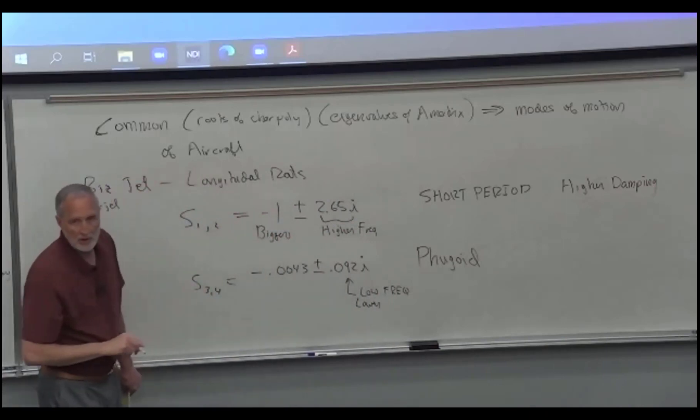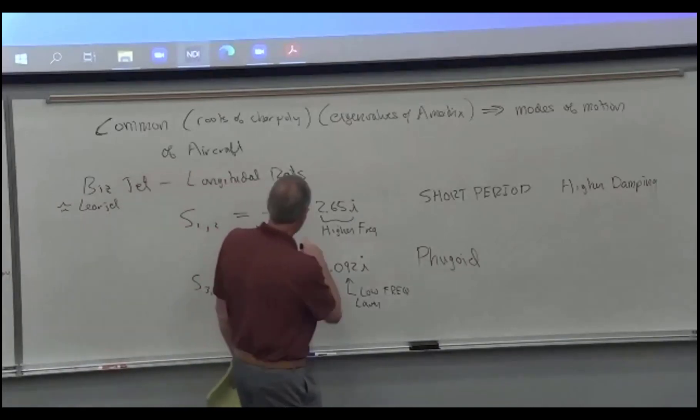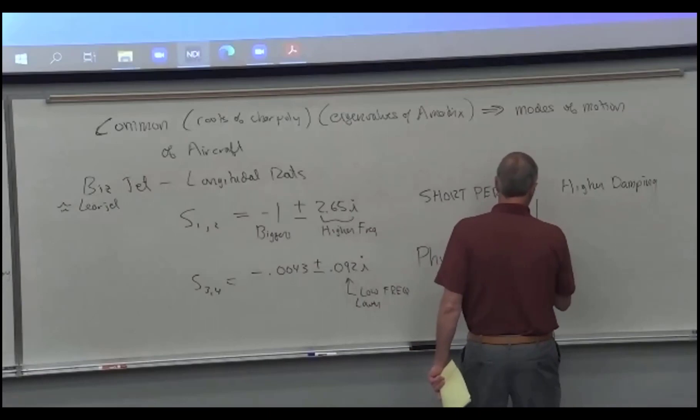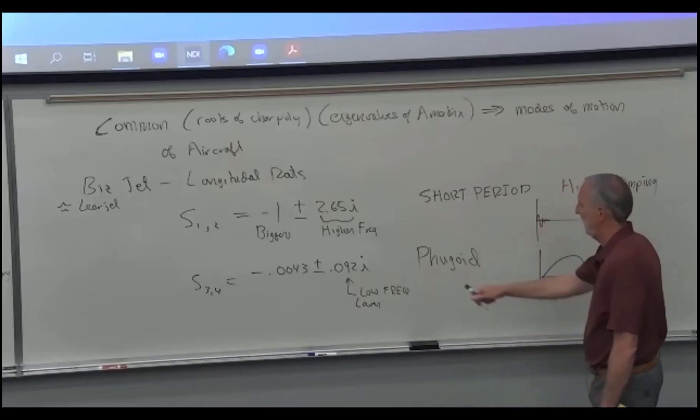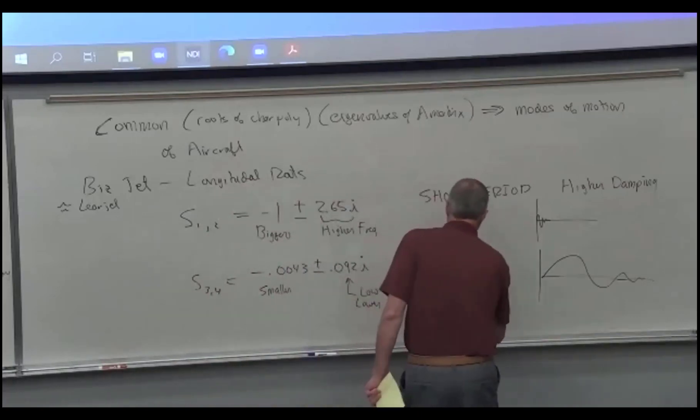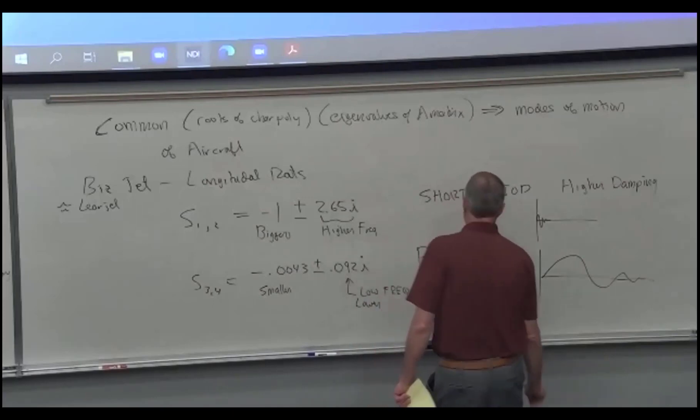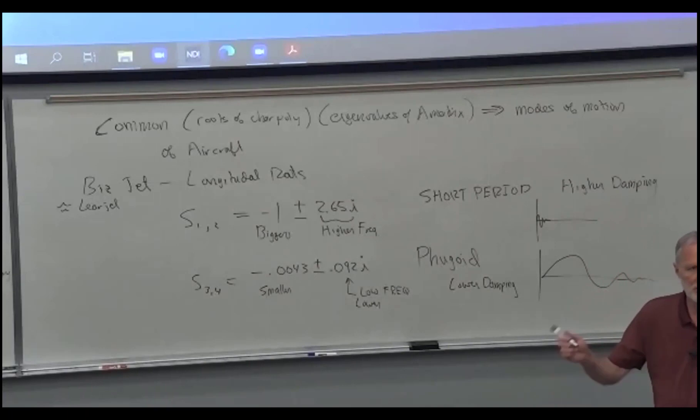So you get e to the minus 1 times t, whereas here you get e to the minus 0.043 t. So this one takes longer to damp out. If we did a plot of this, we get a really fast frequency, but it damps out really fast. Whereas the Fugoid takes a long time to go, and it takes a while to damp out because the damping is low. This is smaller.